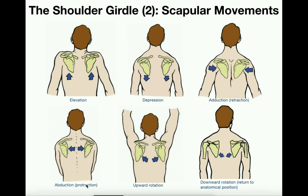Scapular protraction is the opposite of retraction — the scapulae move away from the midline, moving more laterally. This is also called scapular abduction. We would see this movement when the arms move in front of the body, such as throwing a punch or doing a bench press (shoulder flexion). We won't discuss upward and downward rotation much in this series, but upward rotation is closely associated with shoulder abduction, while downward rotation is associated with shoulder adduction.